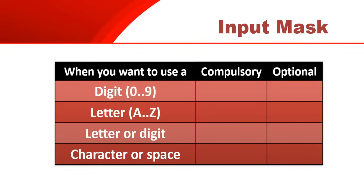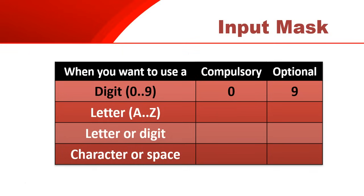For a digit - any number from 0 to 9, taking one digit - we put a 0 as the compulsory code and a 9 for the optional one. So if it's definitely got to be there, we put a 0; if it could be there but could be blank, you put a 9. For a two-digit number from 10 up to 99, you put two 0s for a compulsory two-digit number.